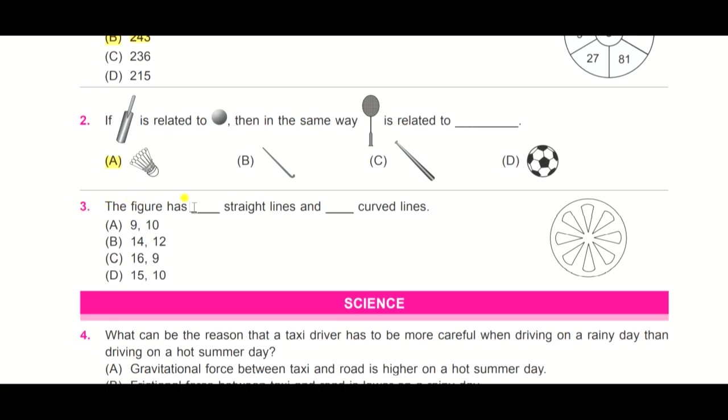Question number three: the figure has how many straight lines and how many curved lines. Look at this figure, children. You need to write the number of straight lines and number of curved lines. Look at the options: option A is 9 and 10, it means 9 straight lines and 10 curved lines. Similarly option B is 14 and 12, C is 16 and 9, and D is 15 and 10. So what is the answer?